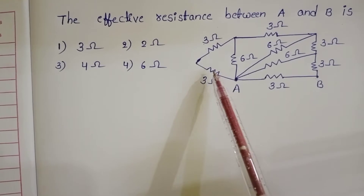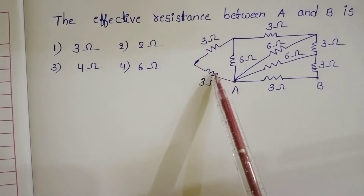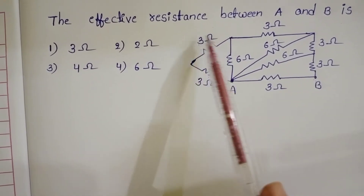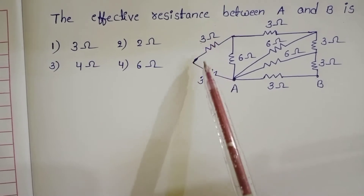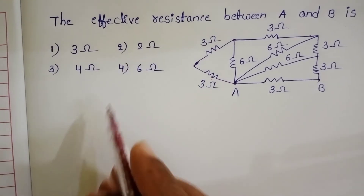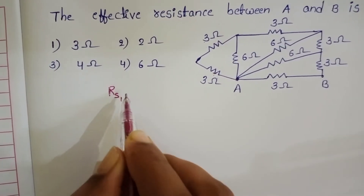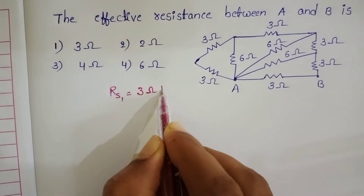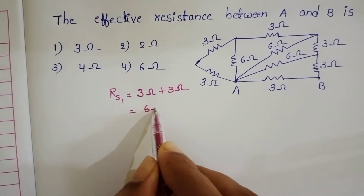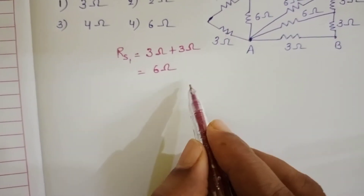Here this 3 ohm resistor and this 3 ohm resistor — these two resistors are connected end to end, a series connection. So the equivalent resistance of these two resistors, RS1, is equal to 3 ohm plus 3 ohm, that is equal to 6 ohm.